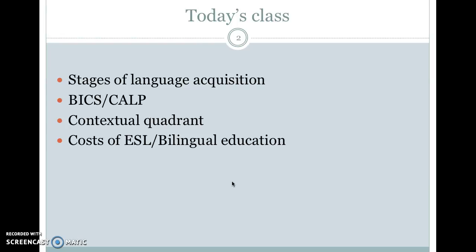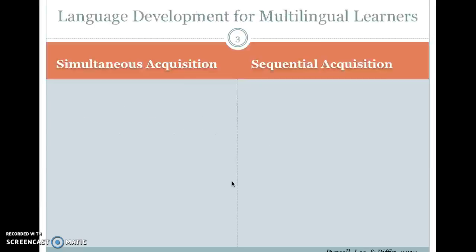If you've done that reading — you can do it either before or after this lecture — you should see similar concepts, and I want to explain some of these concepts. When we talk about language development for multilingual learners, you can either acquire two languages simultaneously or sequentially. Remember what simultaneous or sequential mean.